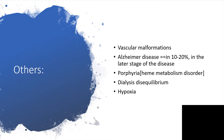Other possible causes include vascular malformations and Alzheimer's disease — and don't be scared, that is just about 10 to 20% of people diagnosed with Alzheimer's disease, and not at the early stage but actually at the later stage of the disease. Porphyria, which is a problem with metabolism, is also a possible cause. Anyone diagnosed with porphyria should be watchful, as they can come down with seizures.